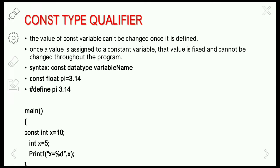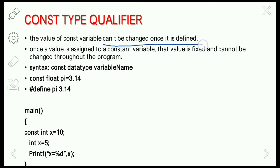The value of a constant variable can't be changed once it is defined. Normally the constant value won't change during execution. Throughout the execution of the program the constant value will be fixed. Once a value is assigned to a constant variable, that value is fixed and cannot be changed throughout the program.